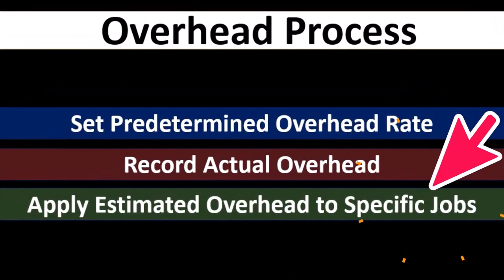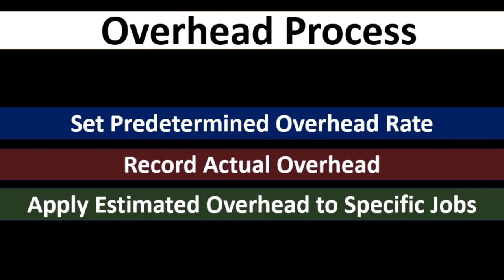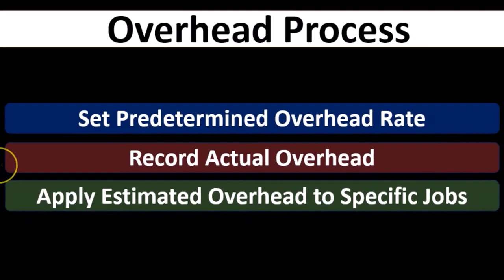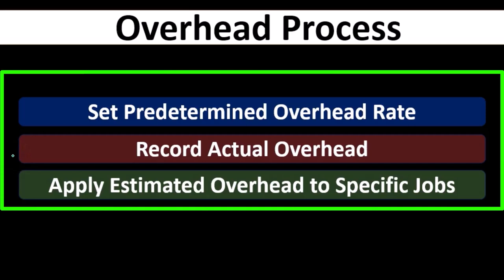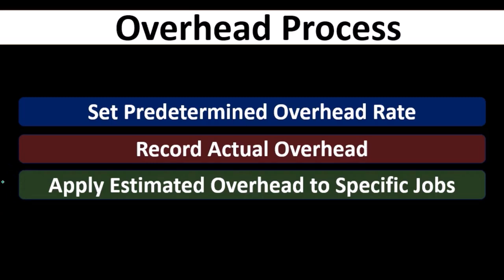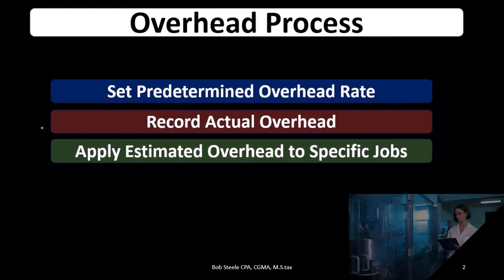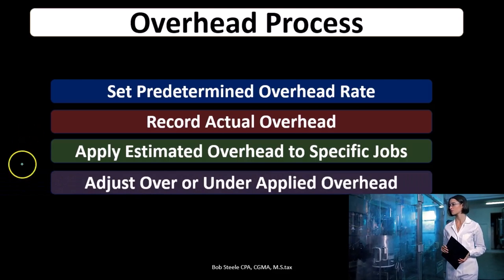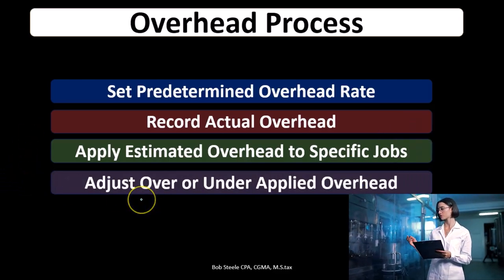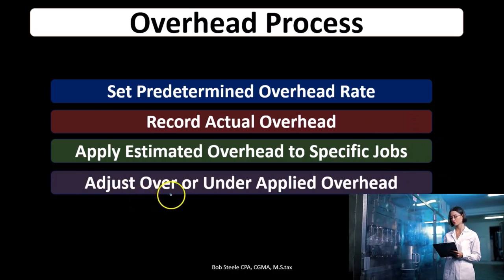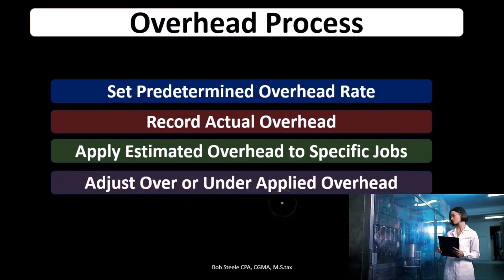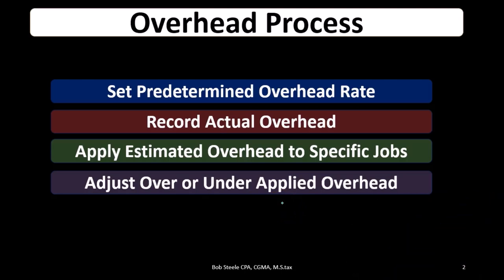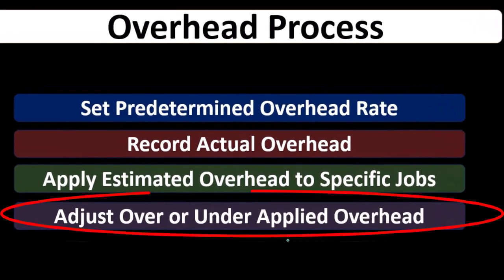Then we're going to apply the estimated overhead to the jobs. We have the recorded actual overhead and the applied overhead. Because the applied overhead is an estimate, it's not going to match the recorded overhead. So we're going to have the problem of over or under applied overhead. We'll have to deal with that over or under applied overhead by the end of the time period so that next month we basically start with zero.